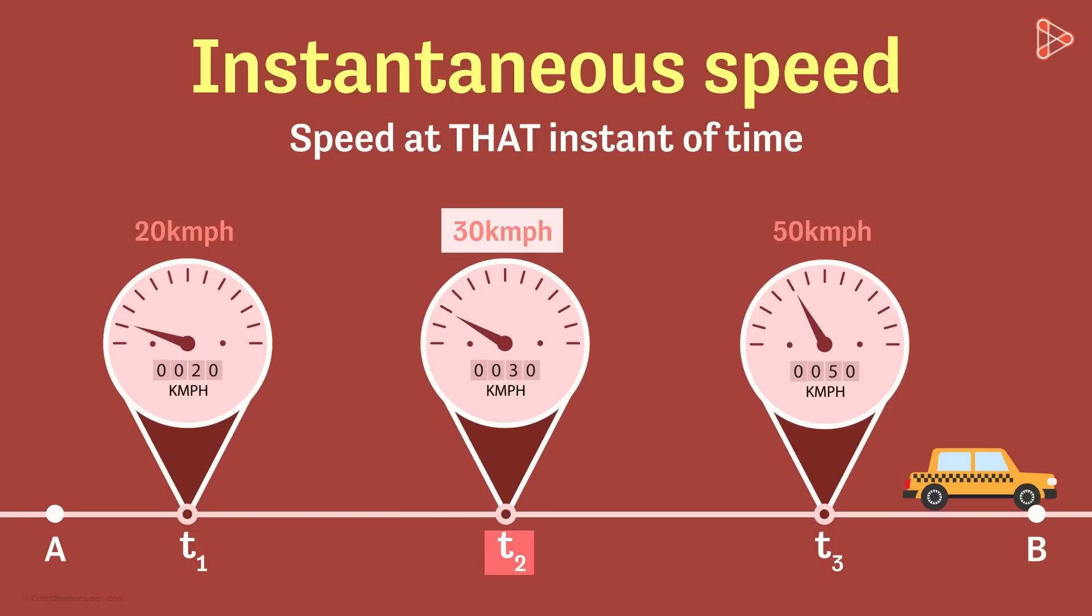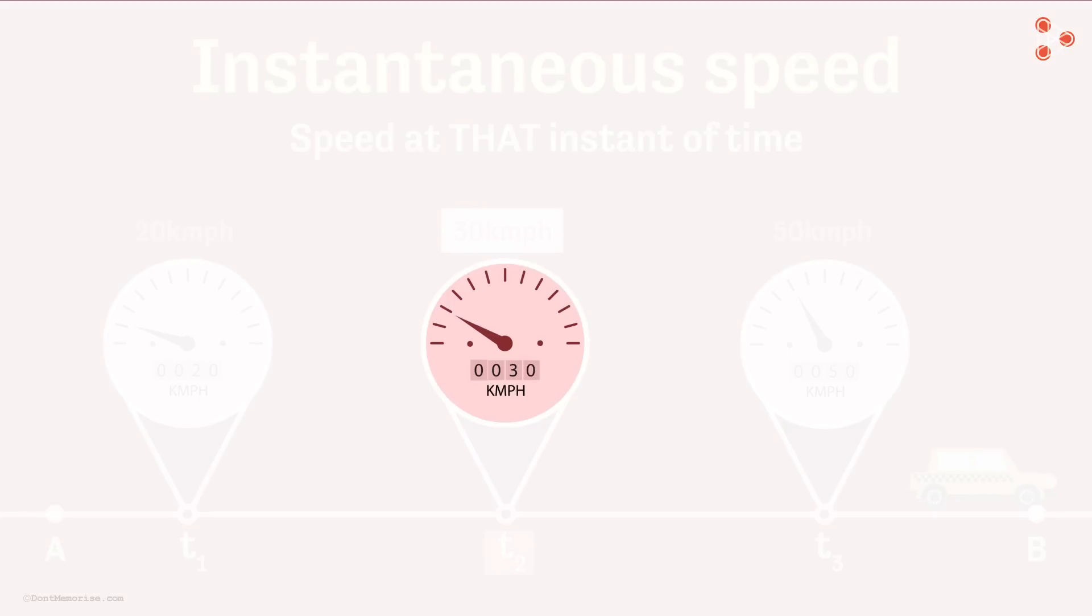It does not say that the car has been travelling at this speed or will travel at this speed. The value is only at that instant. And that is why we see that the pointer is never really constant in the speedometer. It keeps fluctuating.